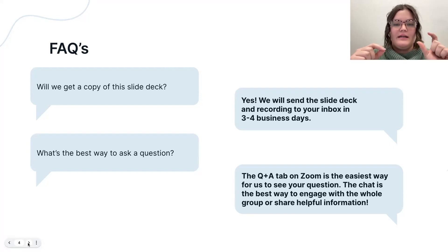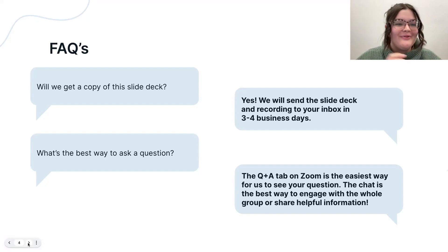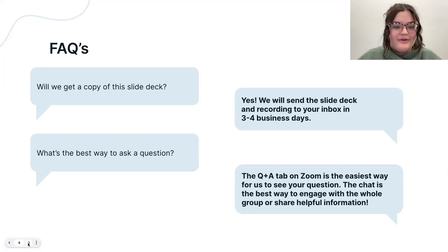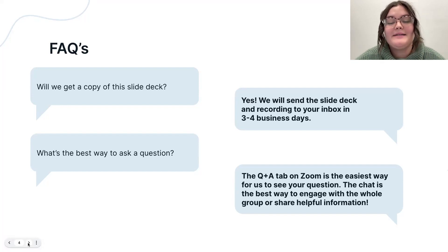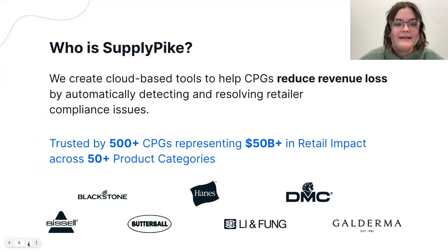The best way to ask a question: at the bottom of your screen you'll see a chat tab and a Q&A tab. The chat tab is a great place to submit insights or engage in conversation — Danielle may put resources in there as Peter goes through the content. The Q&A tab with two little speech bubbles is where we ask you to submit questions related to the content, so they can be queued up for the Q&A time at the end.